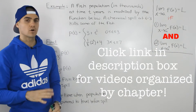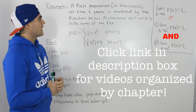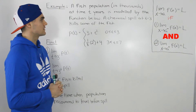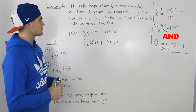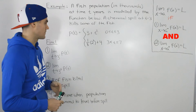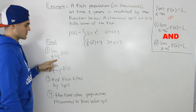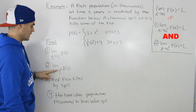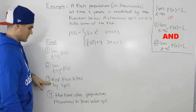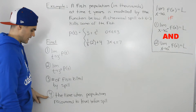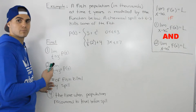Moving on to the next example, we're going to do a word problem dealing with limits. We have a fish population in thousands at time t-years, modeled by a piecewise function. A chemical spill at t equals 3 kills some of the fish. We need to find four things: the limit as t approaches 3 from the negative side, from the positive side, the number of fish killed, and the time when the population recovers to the level before the spill.